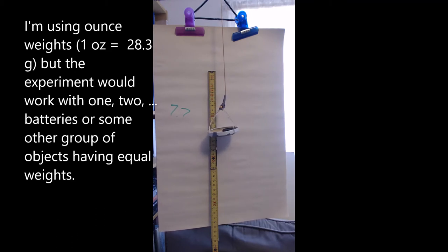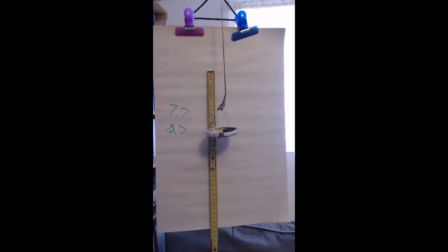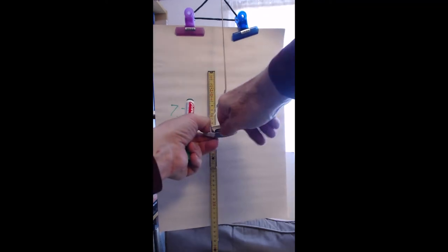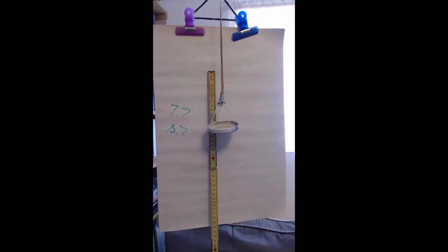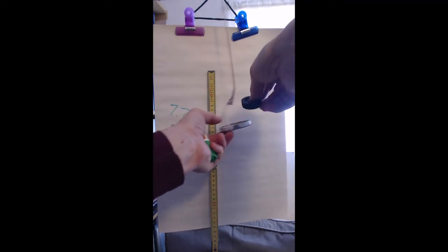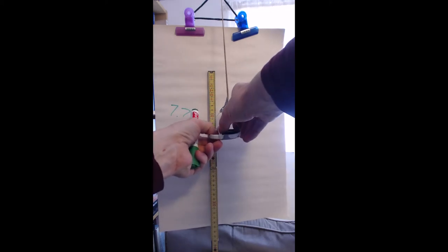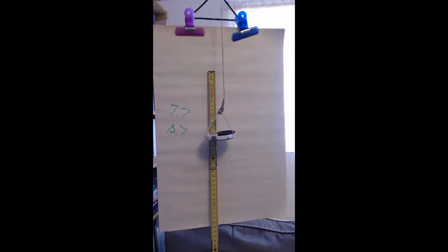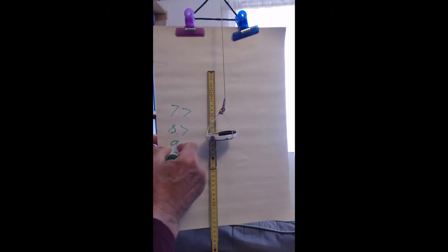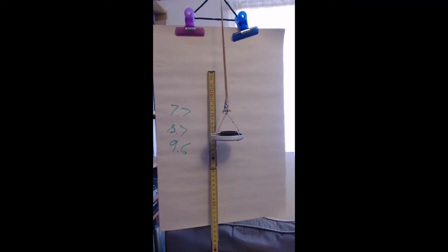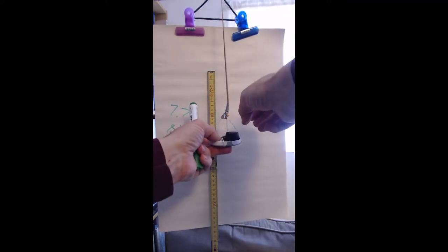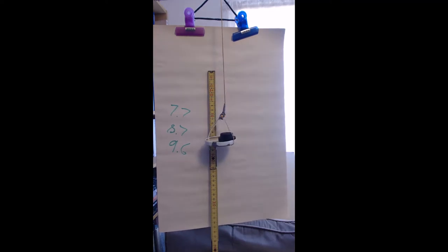With two in there I think we're at about 9.6. We can go up to three. Let's add one back in there on top. Our elastic band has extended a little bit more and we're probably up to 10.7 now.